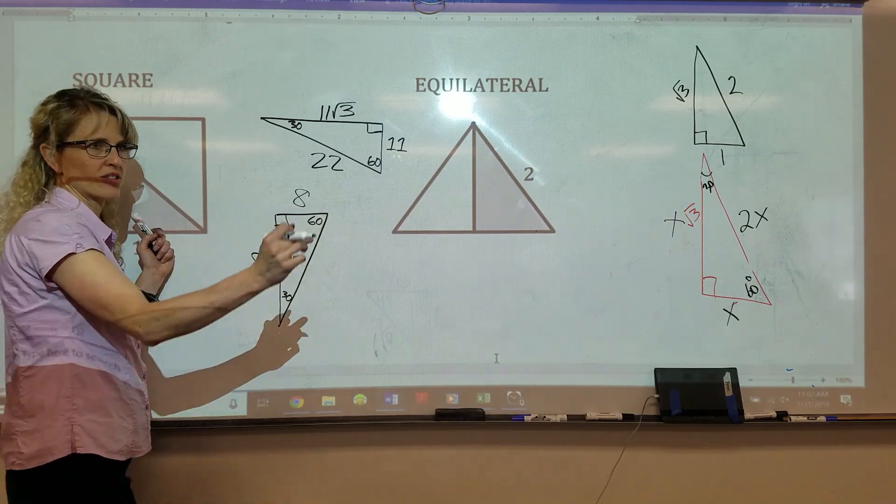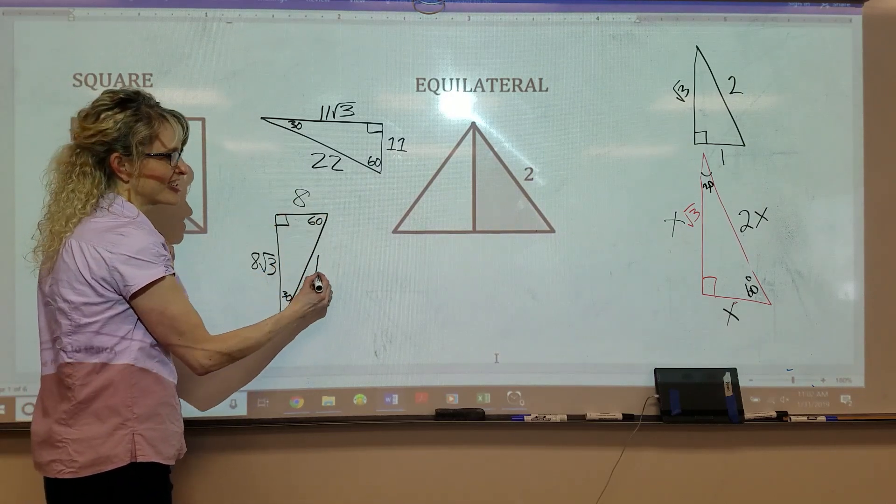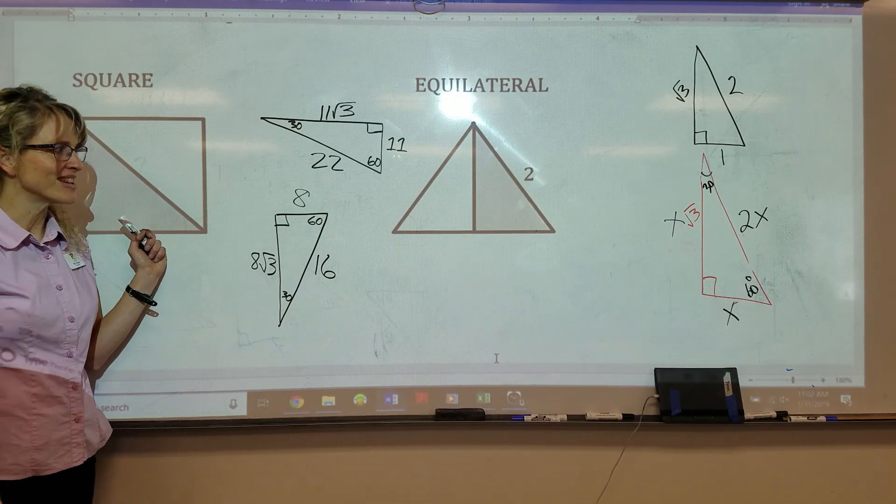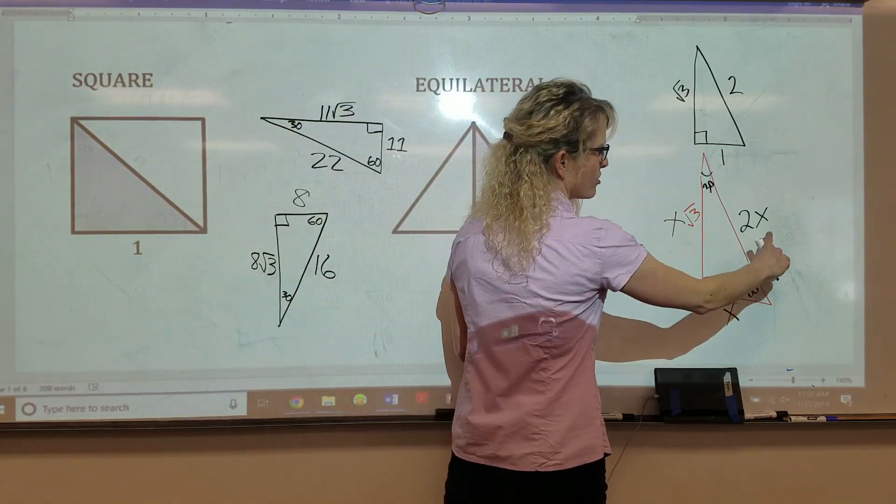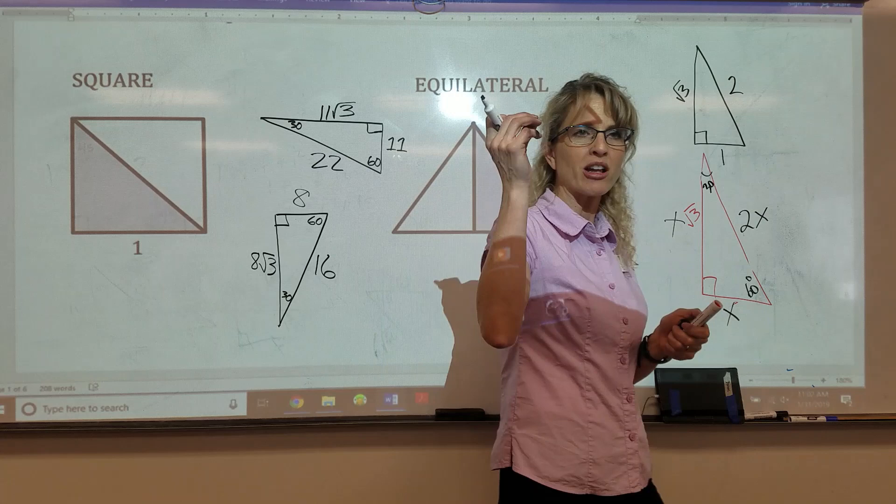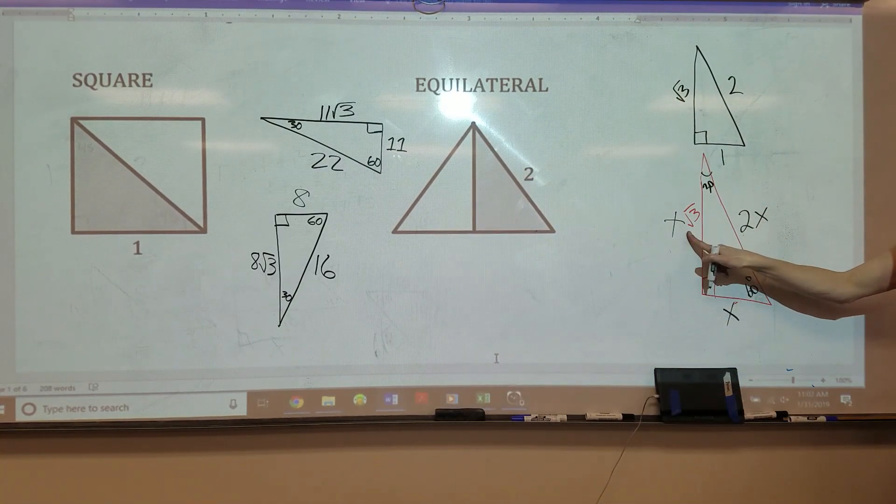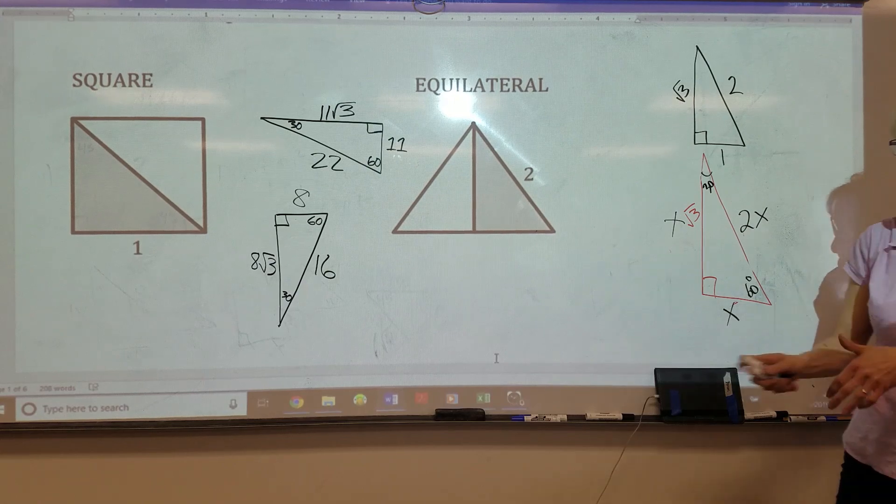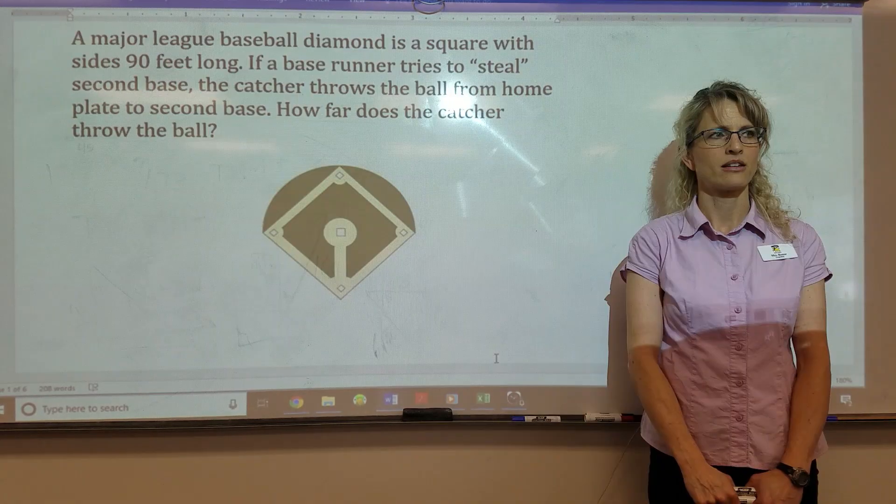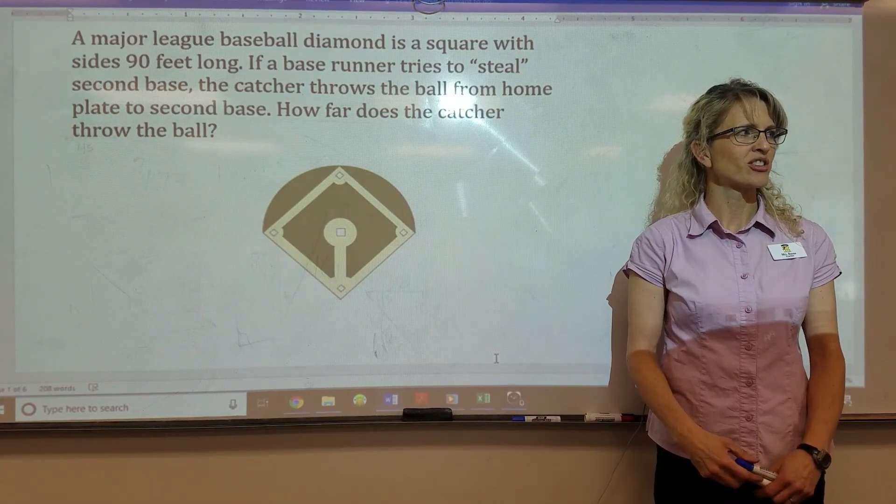Okay. How about your hypotenuse? Olivia? 16. 16. You guys get this. This is awesome. So, again, our pattern. X, 2X, X root 3. What's our pattern on a 30, 60, 90 triangle? Get ready. X, 2X, X root 3. Okay, good. Olivia's in learning position. Thank you, Olivia.